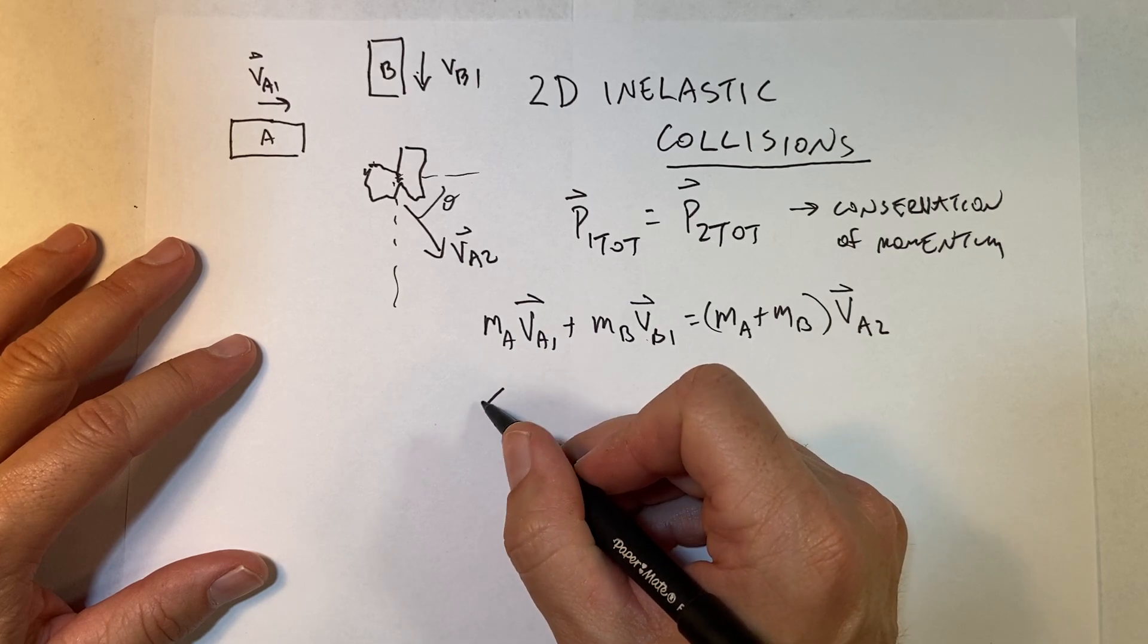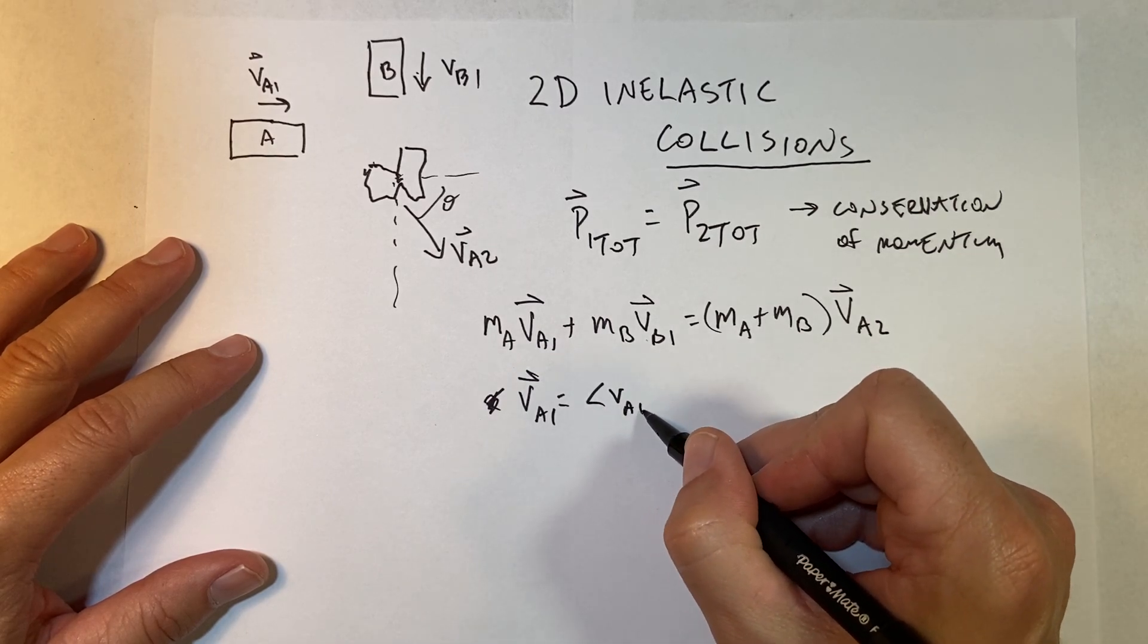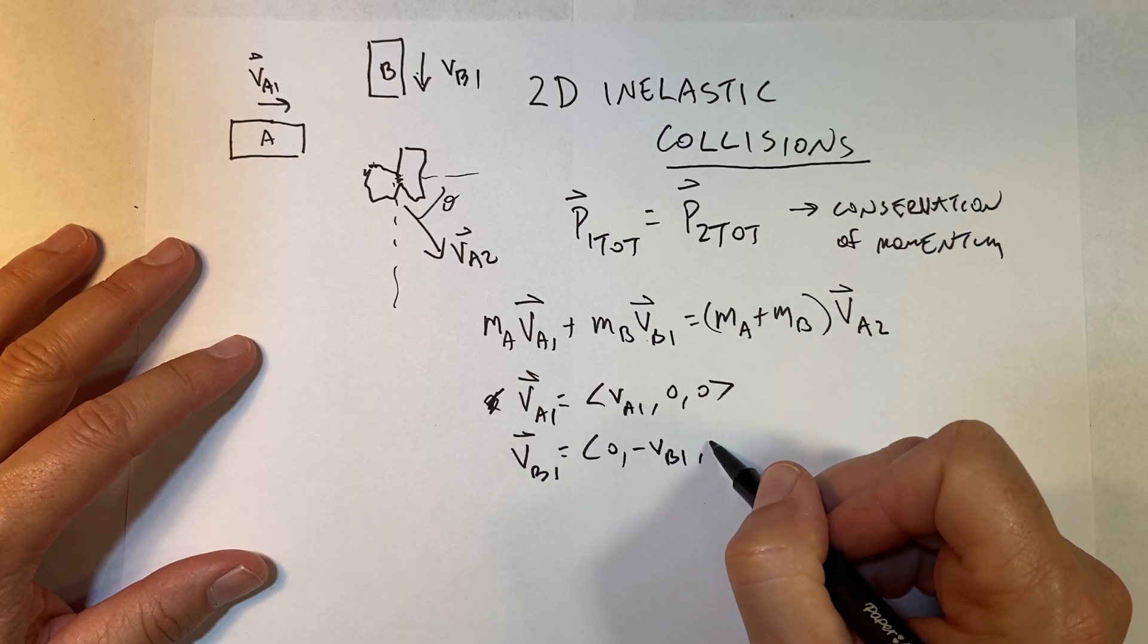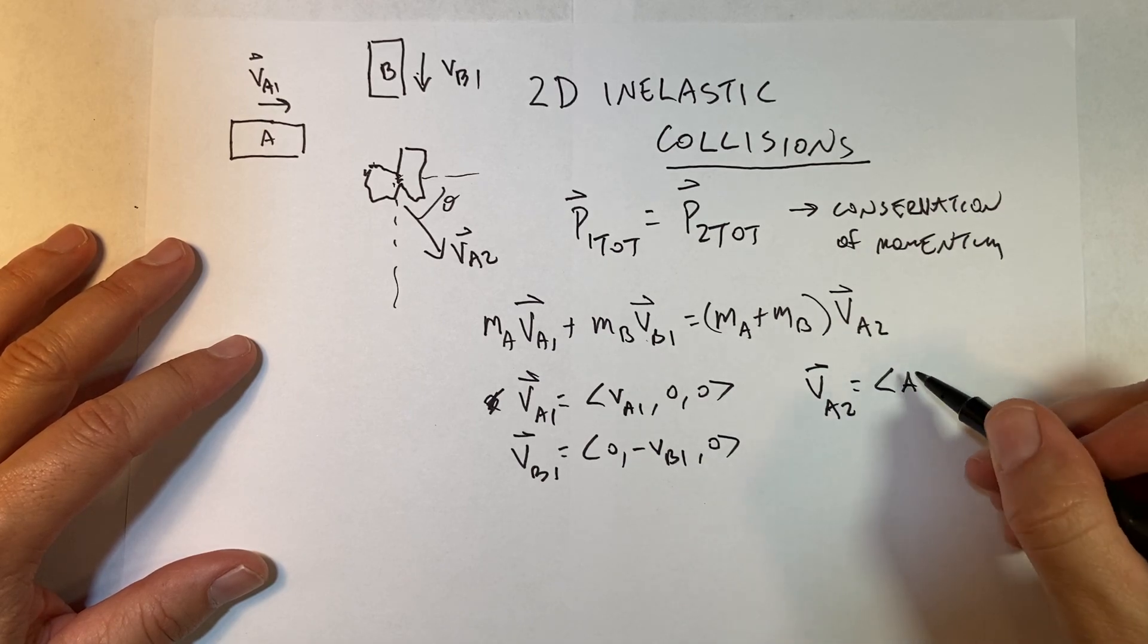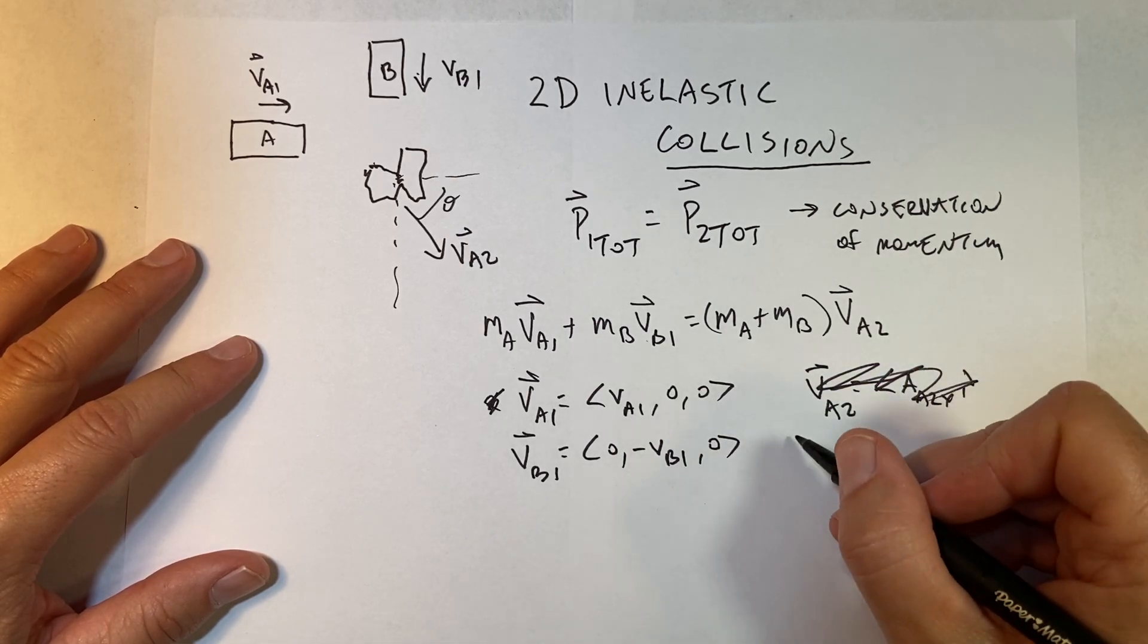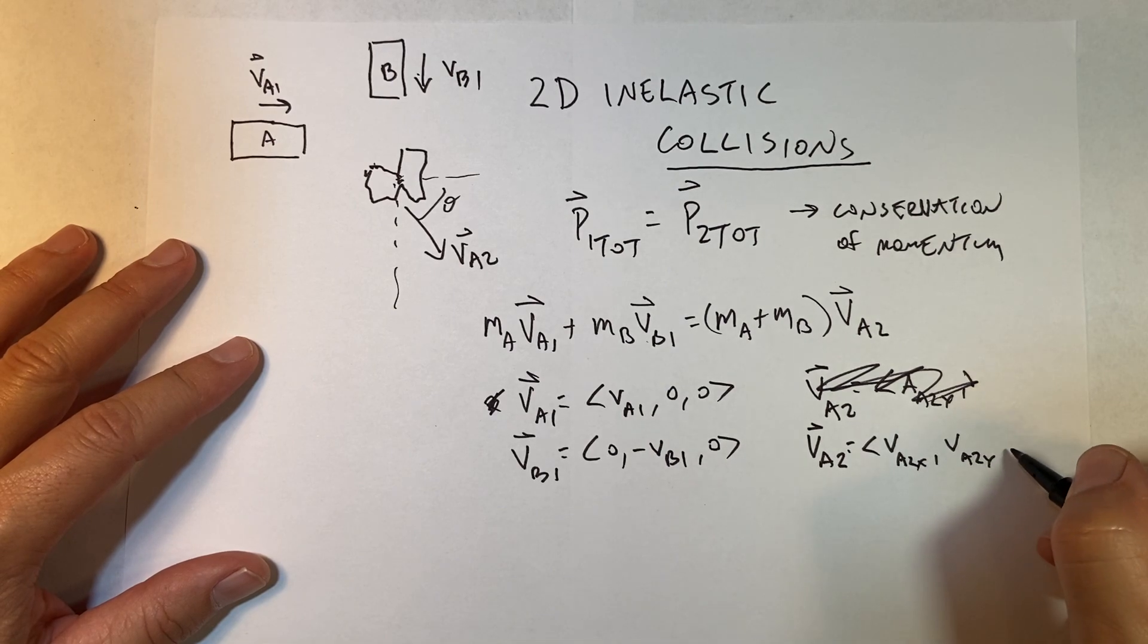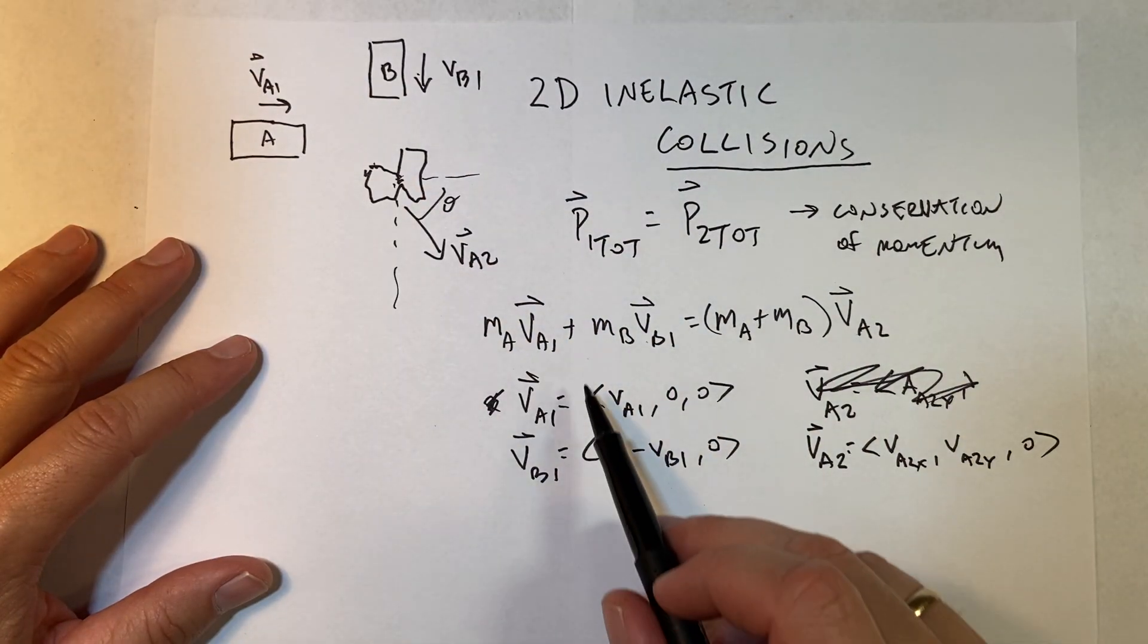Actually, v_A1 is equal to the vector (v_A1, 0, 0). v_B1 equals (0, -v_B1, 0). And then v_A2 equals (v_A2x, v_A2y, 0), assuming it doesn't move up or down the z-direction. And I could put those in and solve this problem and it'd be done.